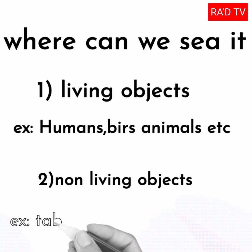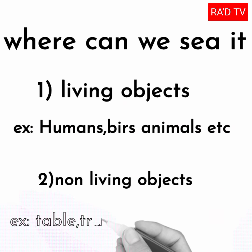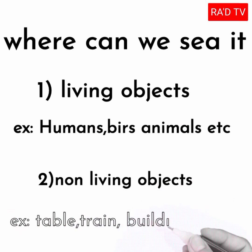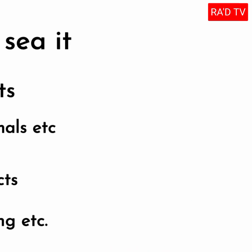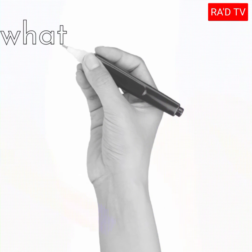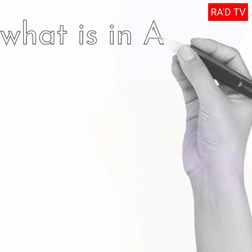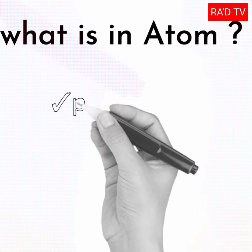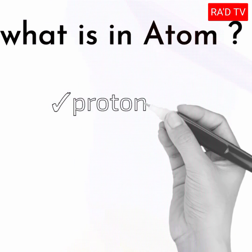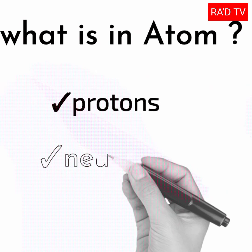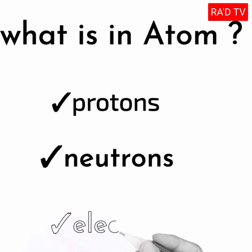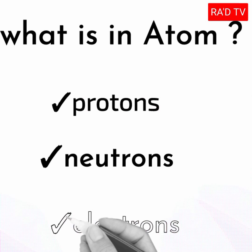And then, what is inside an atom? Inside an atom we can see protons, neutrons, and electrons.